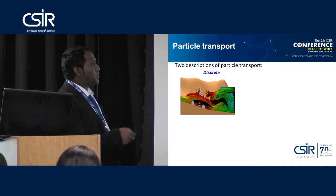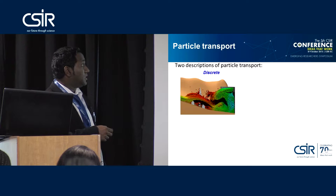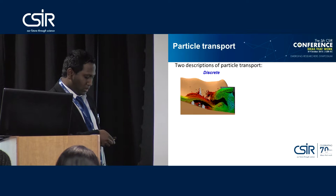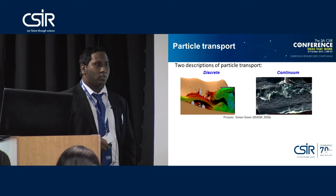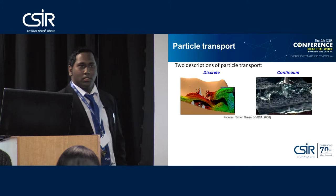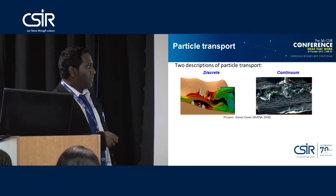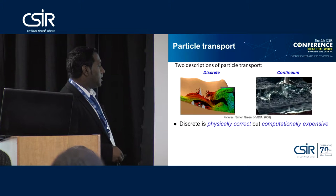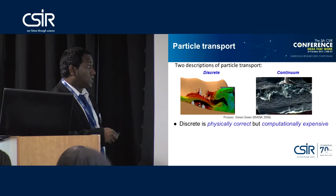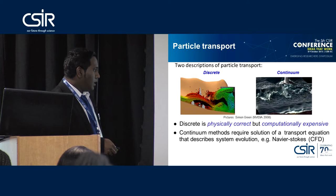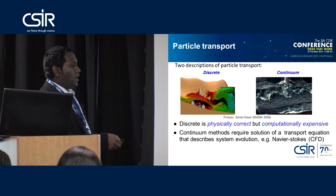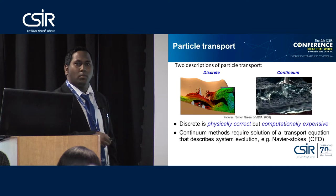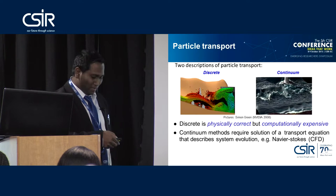So two descriptions of particle transport in science and engineering: the discrete, where we say everything is made of particles — that's the correct one — and an approximation which is a continuum approach. Why do we need approximations? Because if I'm going to simulate everything as particles, I'm not going to have enough computing power; it's not feasible. So you have this continuum approach which approximates reality. The discrete method is physically correct but computationally expensive. Continuum methods are less accurate and require solution of a transport equation, which means you have more physics than mathematics.